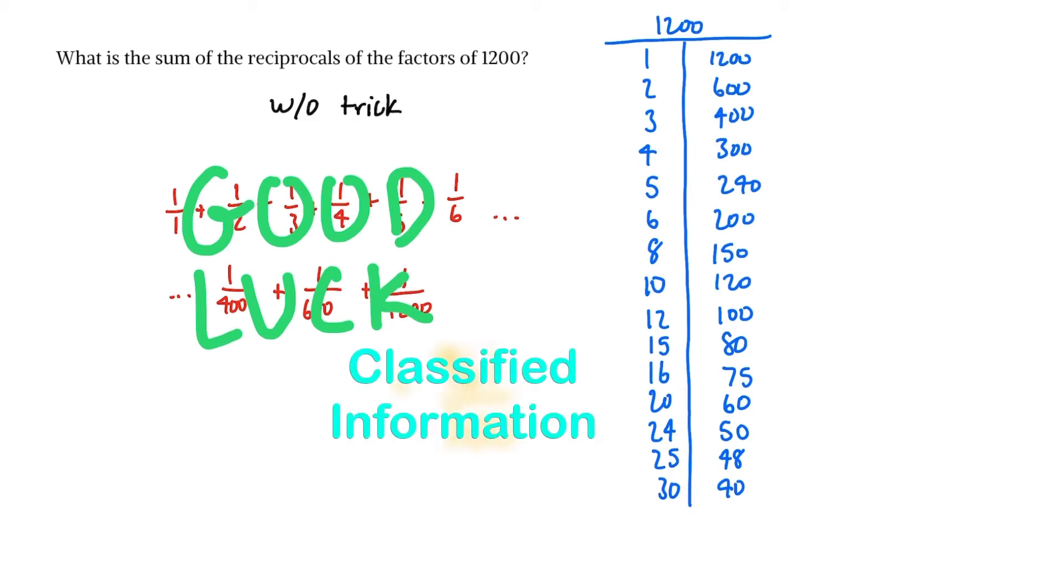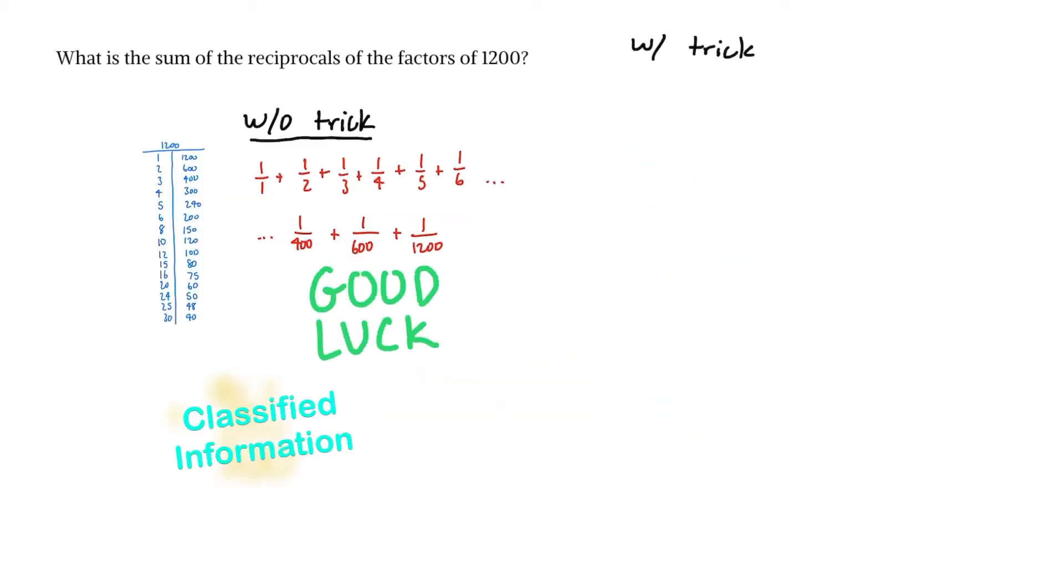the solution with the trick. Now it's time for the solution with the trick. In our head, when we see this, we think of 1/1 + 1/2 + 1/3, similar to the solution without the trick. But if you notice, all of these could form a common denominator with 1200 since they're factors. Taking it one step further, when we do the common denominators of these, we get 1200